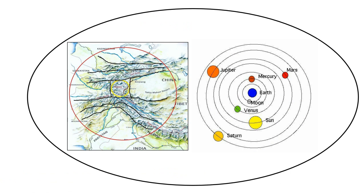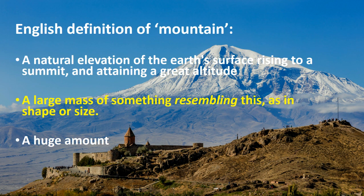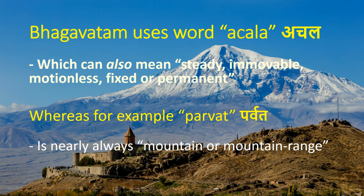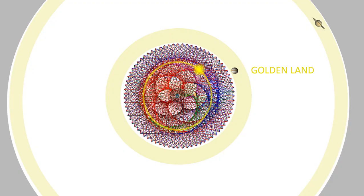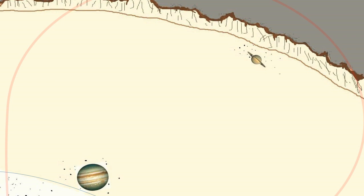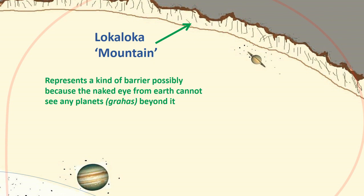Combining the solar system with the mountainous regions. The English definition of mountain means a natural elevation of the earth's surface rising to a summit at great altitude, or a large mass resembling this in shape or size. The Bhagavatam uses the word Achala for mountain, which can also mean steady, immovable, motionless, fixed, or permanent — whereas Parvat is nearly always mountain or mountain range. Just beyond Saturn in Bhumandala is the Loka-Loka mountain, which could represent a kind of barrier, possibly because the naked eye from earth cannot see any planets or grahas beyond it — so it's not a literal granite mountain as we may imagine.